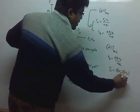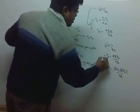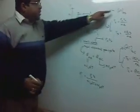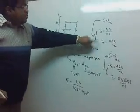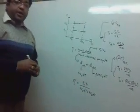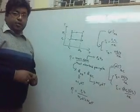So from this, you can calculate this quantity. Now by substituting these two values, you can get the value of η for this cyclic process.